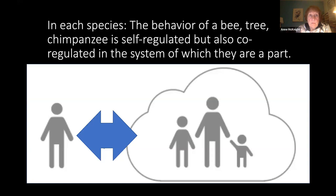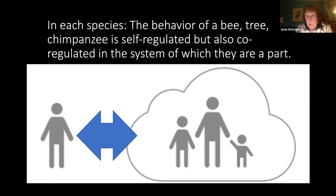In each species — the bee, the tree, and the chimpanzee — there is self-regulation: the individual entity must survive. The tree has to grow, the bee has to do what it does, and the chimpanzee regulates itself within the troop. But it is also co-regulated in the system of which they are a part. So it is a reciprocal process of individual regulation and also being regulated by the group.